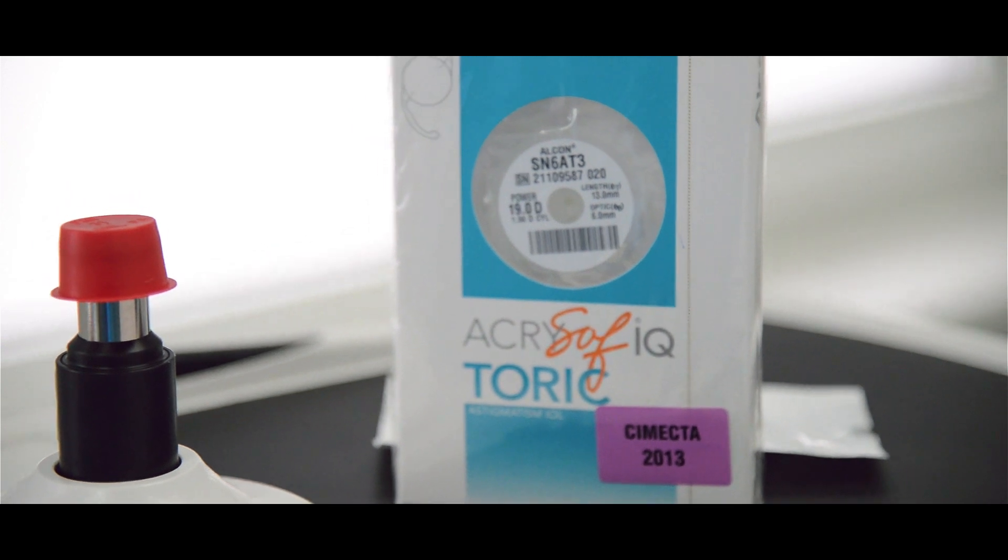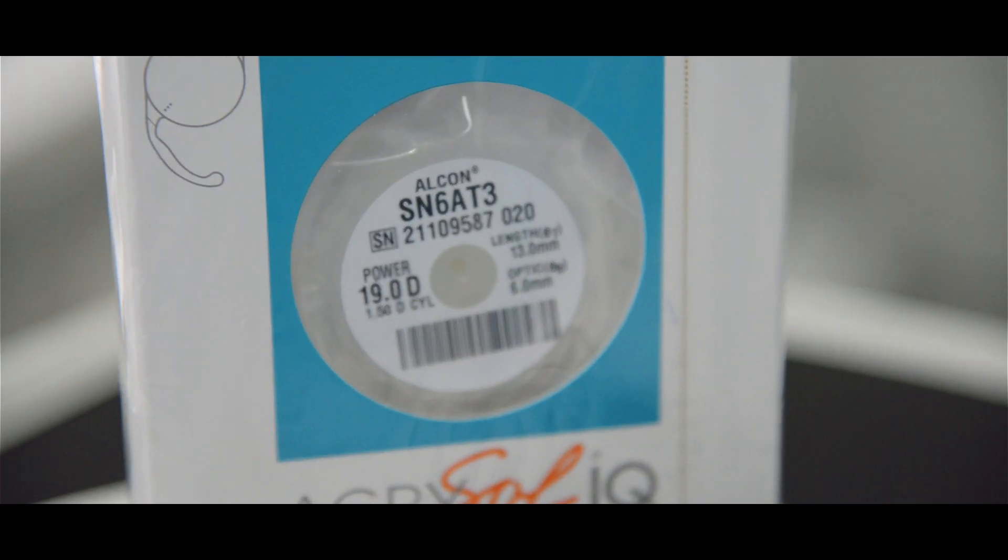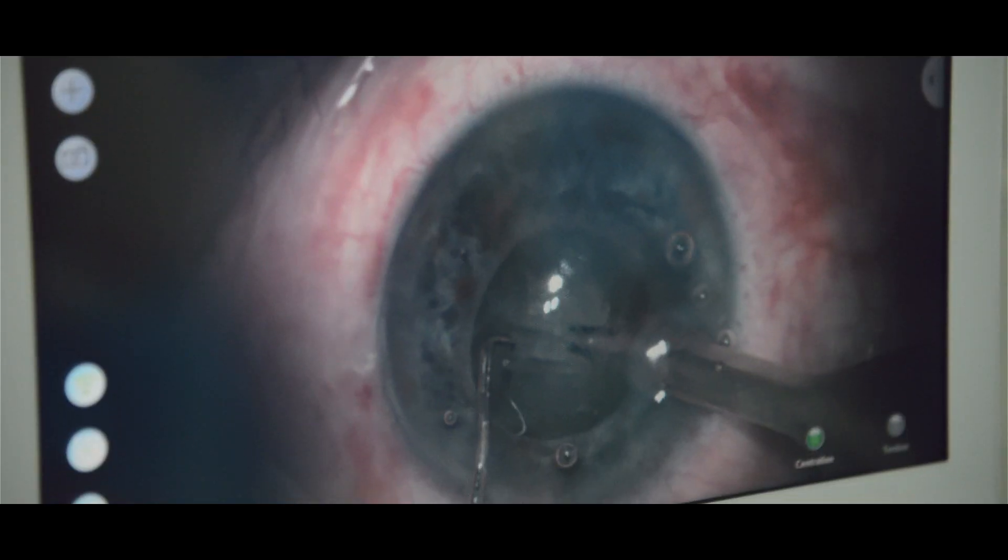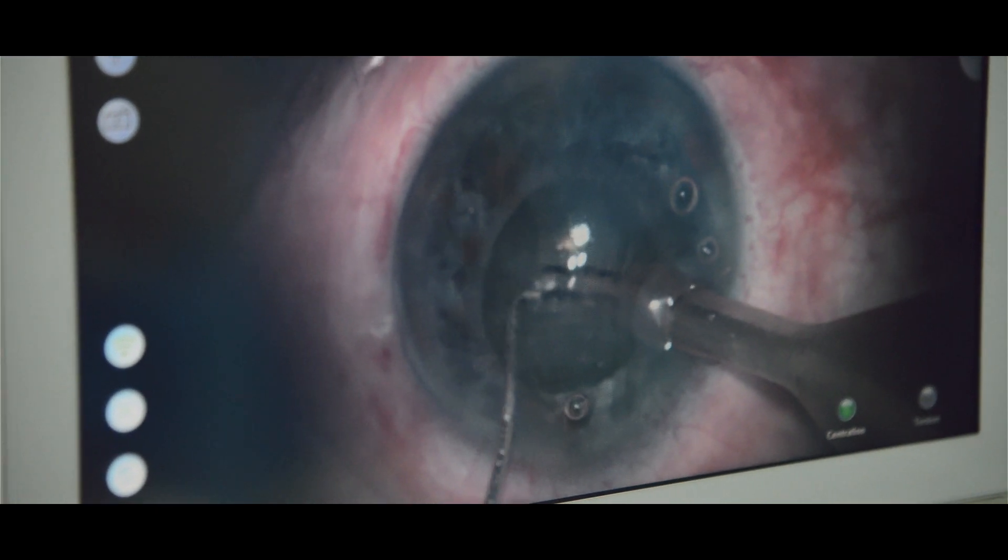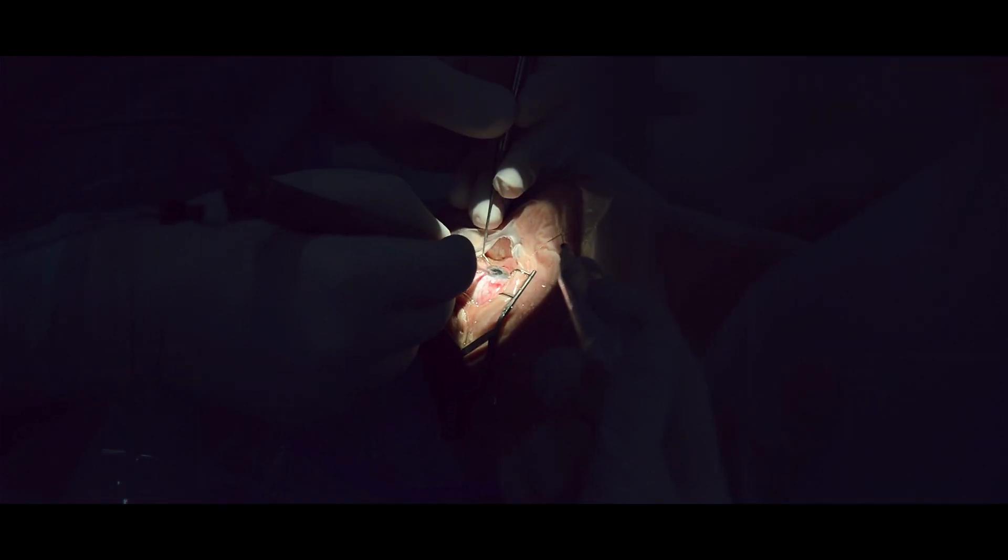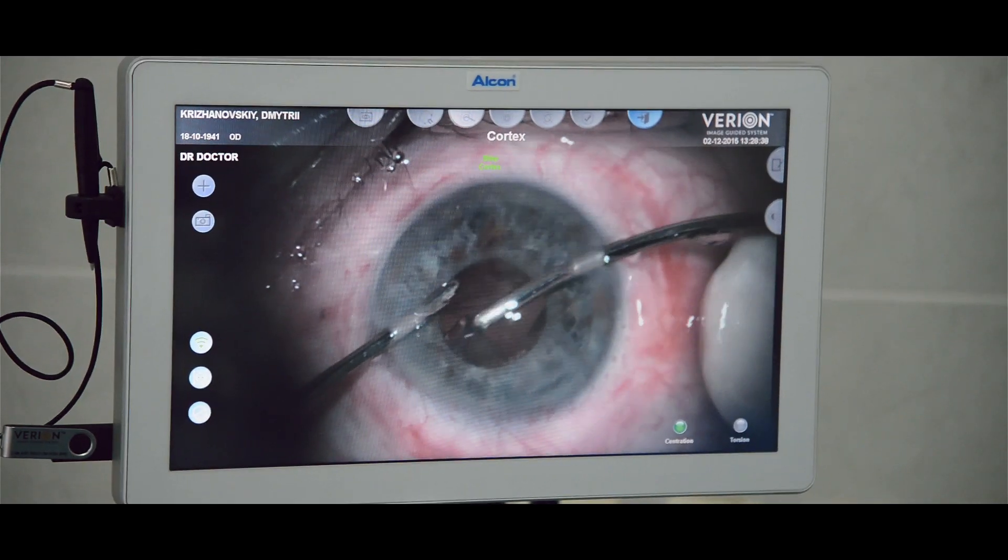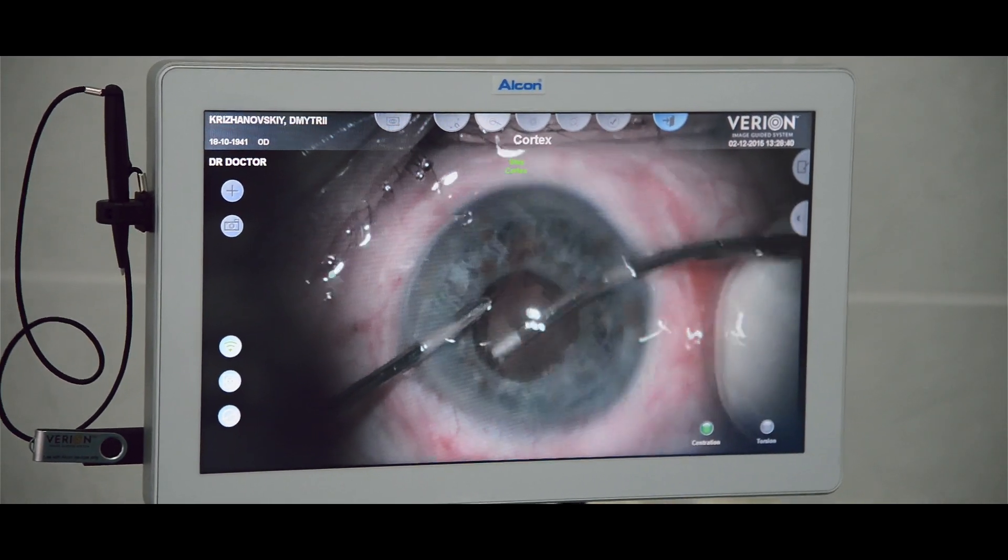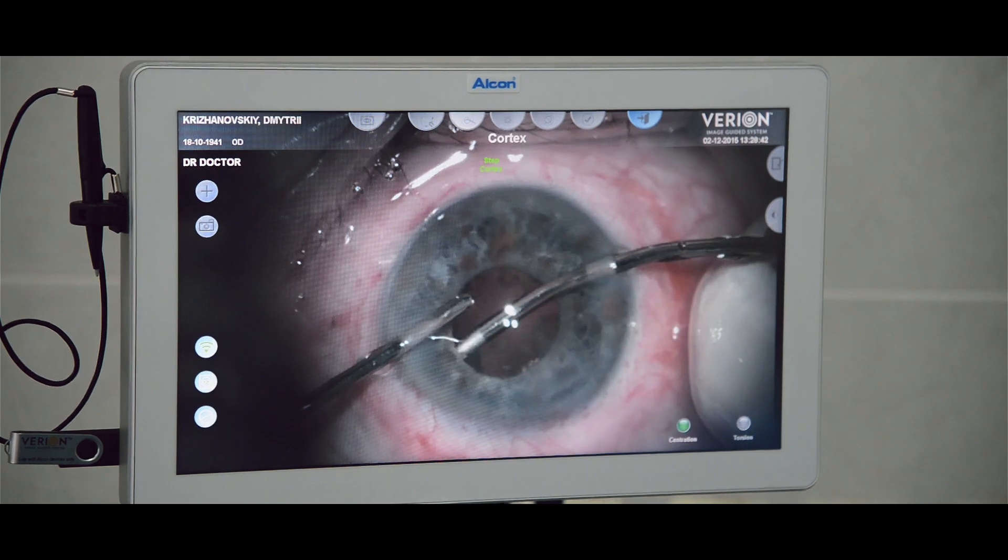The nucleus was then separated along the femtosecond cleavage planes and aspirated with the phacoemulsification probe. Phacoemulsification was performed using phacochop technique. The lens masses are aspirated using bimanual aspiration irrigation system.